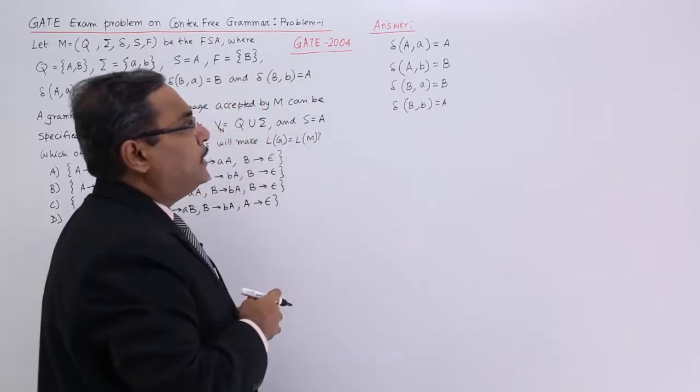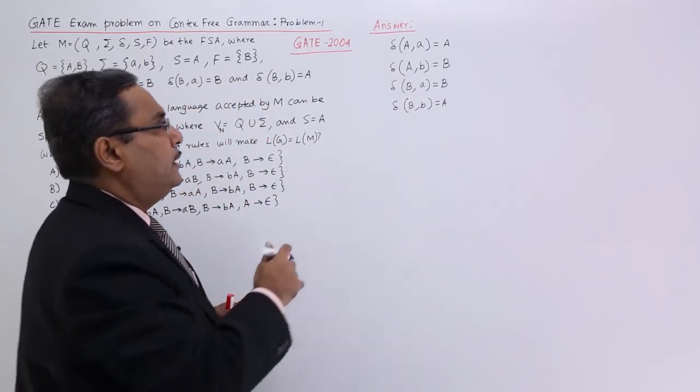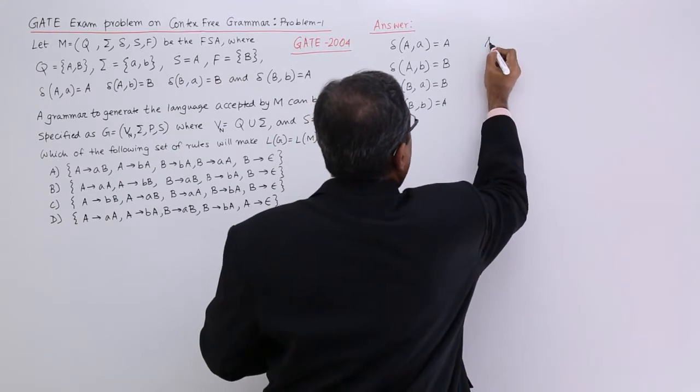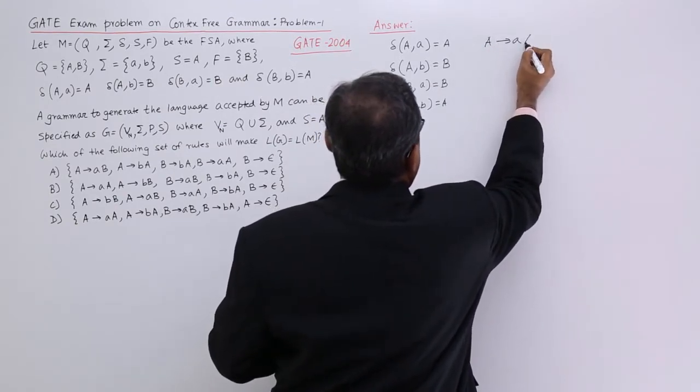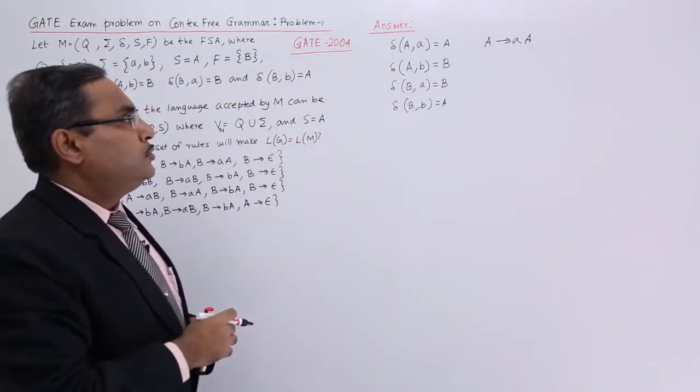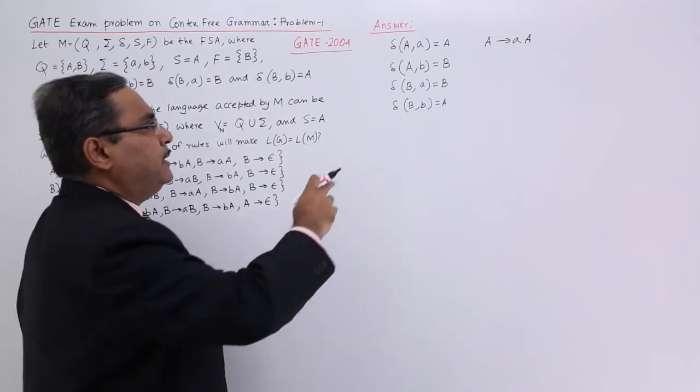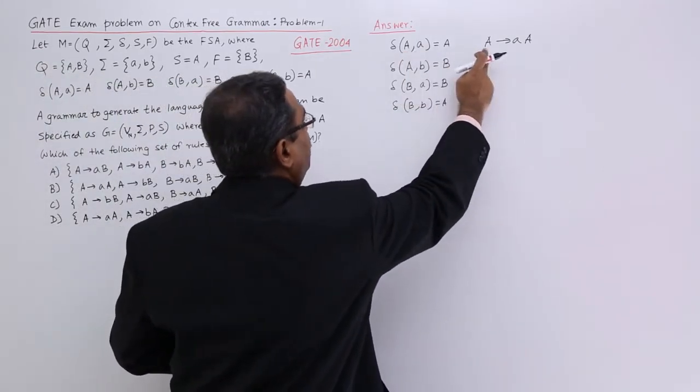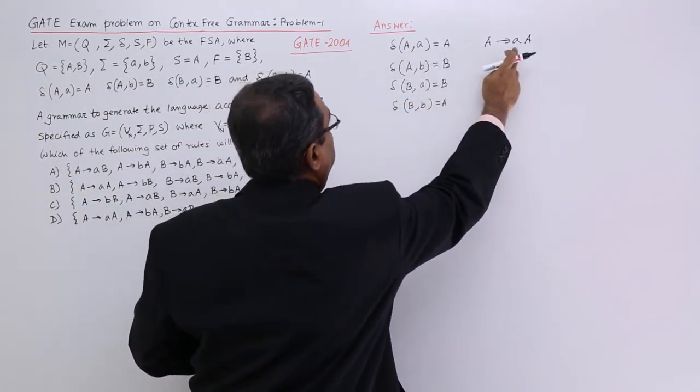Delta capital A comma small a is equal to A. Then, against this one, we just write A produces A A. A produces A A that means, this A is this one and this A A is this one.